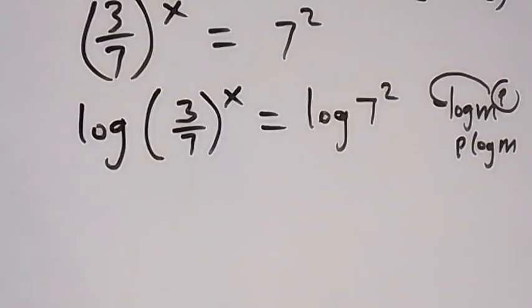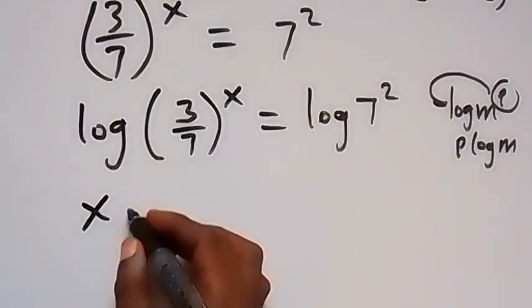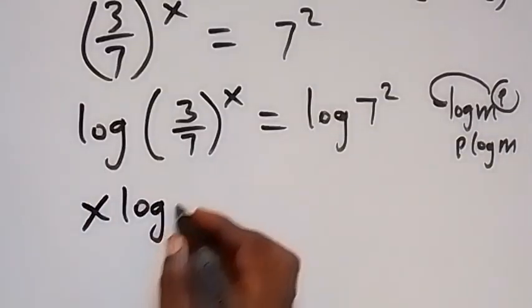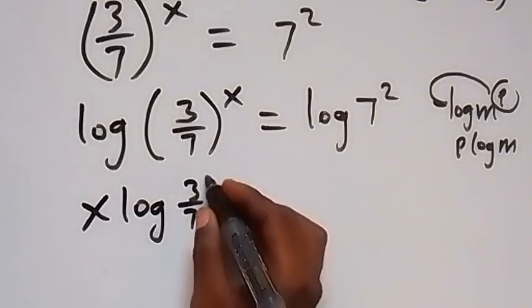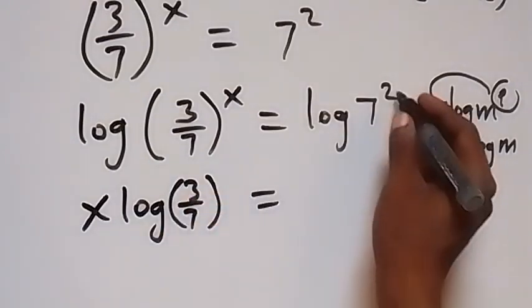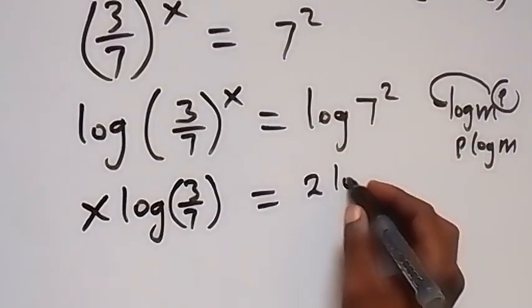This will become x log 3 over 7, and here equals 2 log 7.